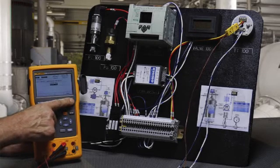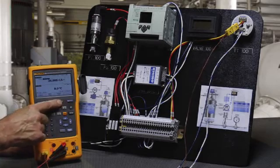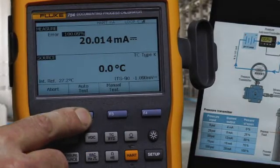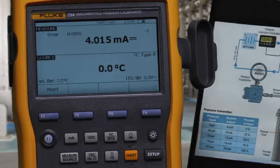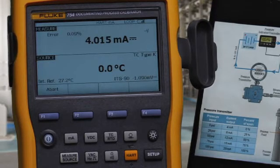After adjustment is complete, we can document the as-left condition of the transmitter after adjustment, and perform the auto test, and automatically record the applied temperature, measured current, and error percent of span after adjustment.